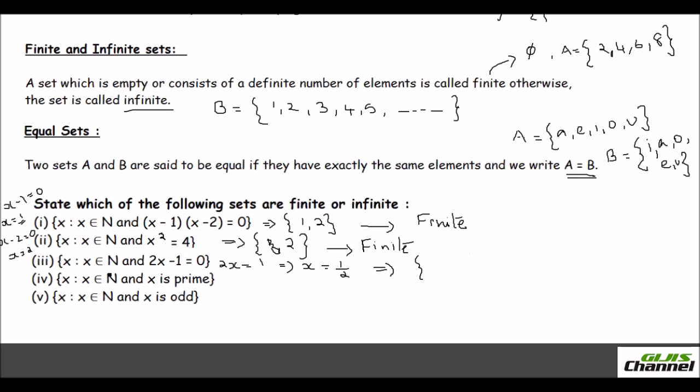Now the third one, here they say x is an element of natural number and 2x minus 1 is equal to 0. So you just put any natural number inside this and see what gives you equal to 0. If I put 1, even 1 the least number, it is 2 minus 1 is 1. So you are not going to have any elements which satisfy this. So that's a null set. So even the null set is a finite set. That's what we learnt here - empty set or if it has definite number of elements, you call it finite. So this is also a finite set.